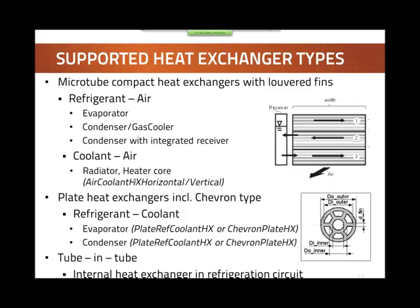Another important type is plate heat exchangers, including the chevron type. They are also used for refrigerant-coolant applications — for example, if you want to use the refrigeration cycle for battery cooling, you may want to go to a secondary fluid, and then you need a heat exchanger that transfers heat from this fluid to the refrigerant. A rather simple type is the tube-and-tube heat exchanger, also included.